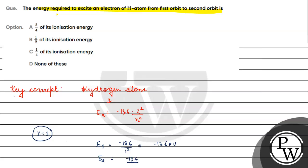For n=1: E1 = minus 13.6 by 1² = minus 13.6 eV. For n=2: E2 = minus 13.6 by 2² = minus 3.4 electron volt. Now, the question says energy required to excite an electron of hydrogen atom from first orbit to second orbit.